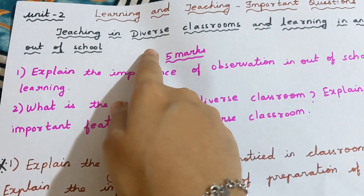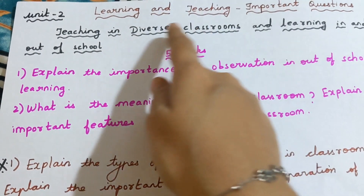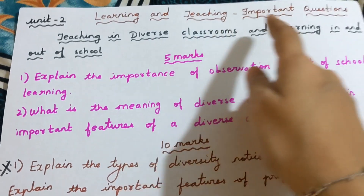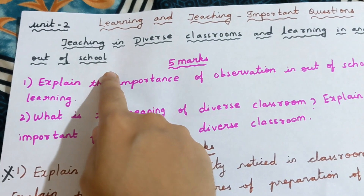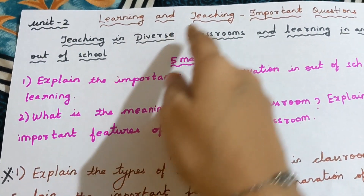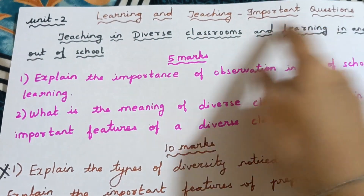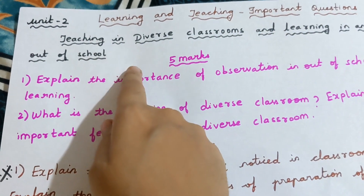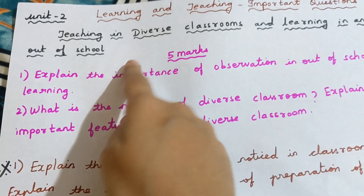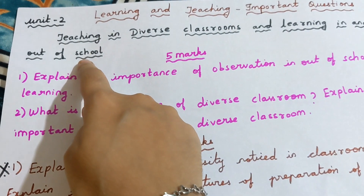In the name itself, there are two important terms. One is Diverse Classroom, and another one is Learning in and out of school. So you need to concentrate on the Diverse Classroom topic and the Learning in and out of school topic. Mostly you will get questions from these two topics only in the examination.